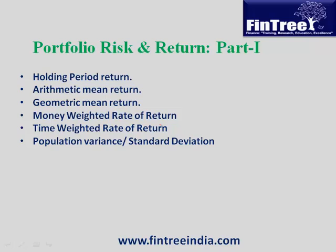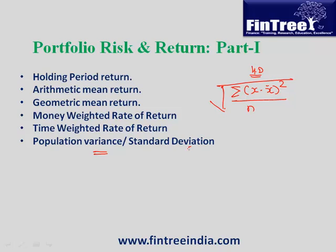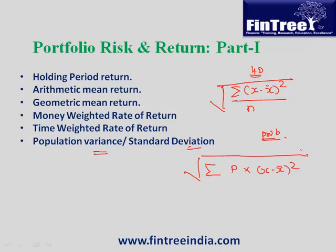The next concept is population variance and standard deviation. If given historical data, the formula for variance is: summation of (x minus x-bar) squared, divided by n. Standard deviation is the square root of this. If probability data is given, the formula becomes: summation of probability × (x minus x-bar) squared for variance, with standard deviation as the square root.